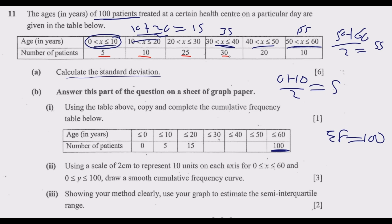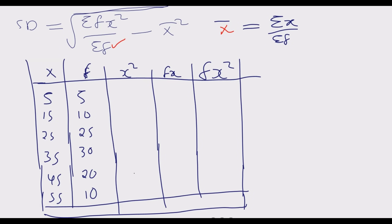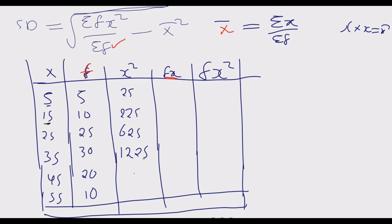Next, find x² by squaring each midpoint. So: 5² = 25, 15² = 225, 25² = 625, 35² = 1225, 45² = 2025, and 55² = 3025. Remember, a calculator is allowed, so use it to verify these squared values.